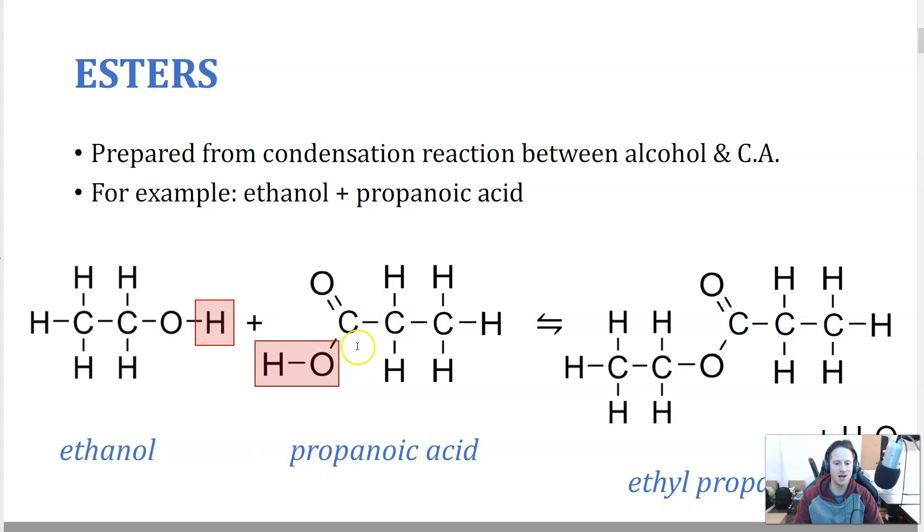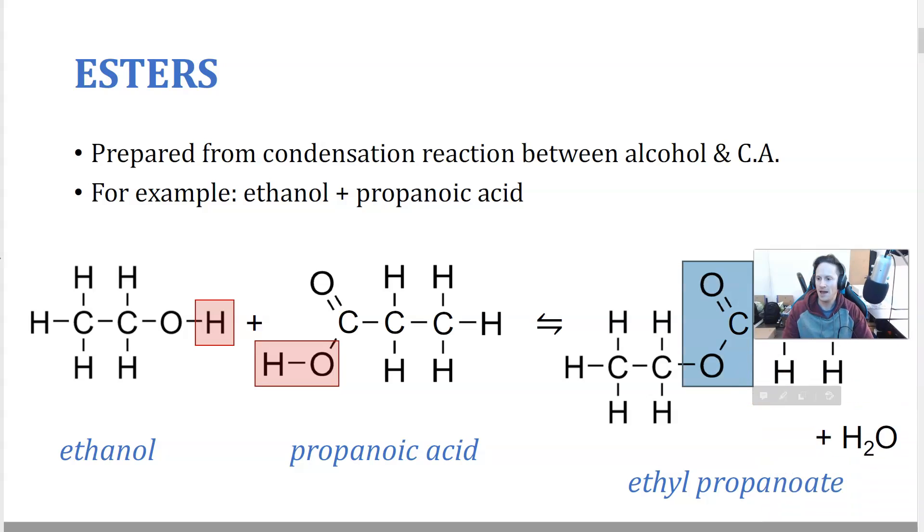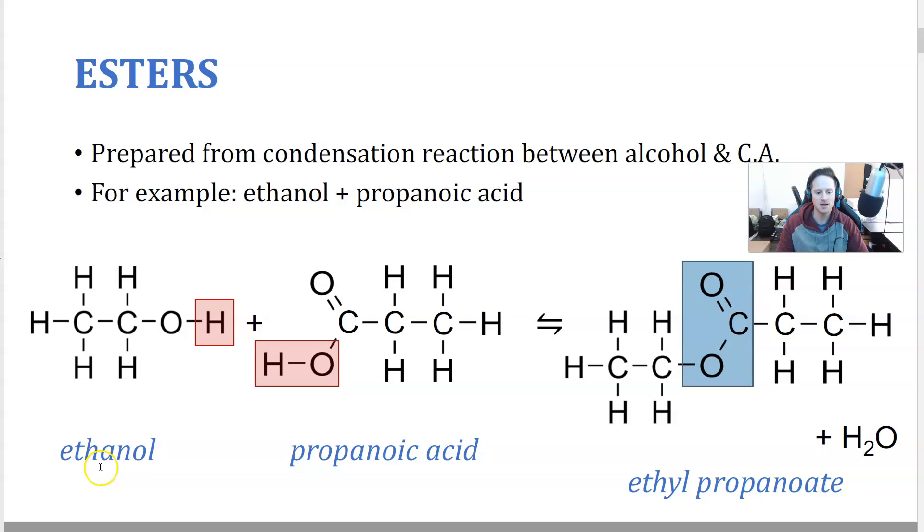Now when you're drawing a reaction, it's always good to have the alcohol and the carboxylic acid functional groups side by side so you can easily have the water dropping off. The water is highlighted here, that's going to fall off and what you end up with is the O combining with this carbon to form this ester functional group here. And that is called ethyl propanoate. So ethanol becomes ethyl, propanoic acid becomes propanoate. Remember the naming convention is from the alcohol first and then the carboxylic acid next.